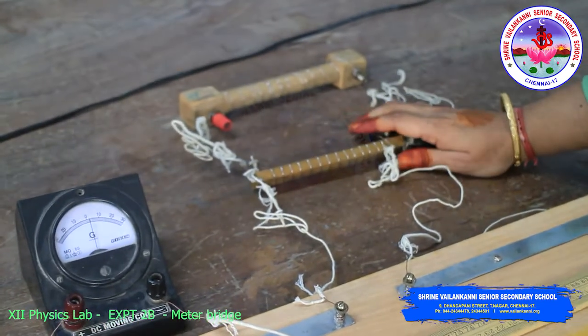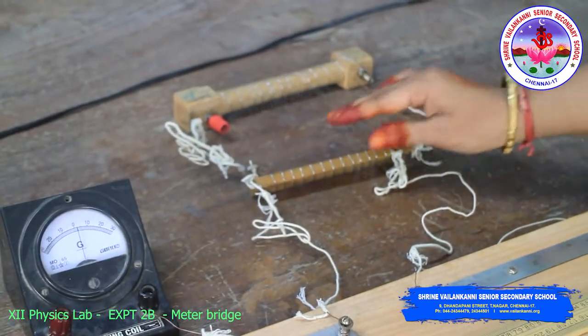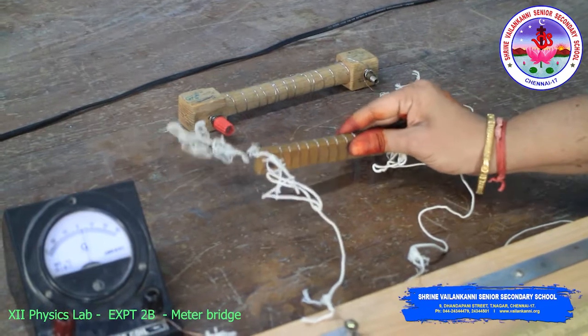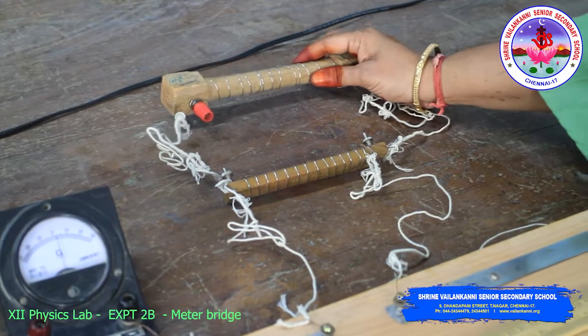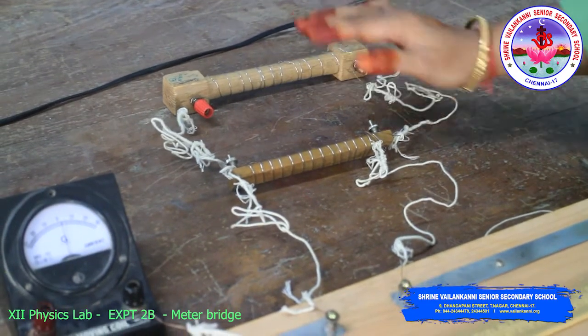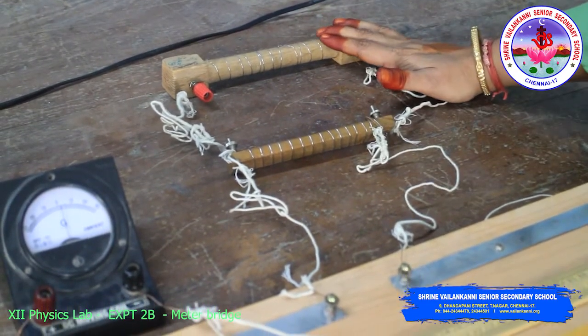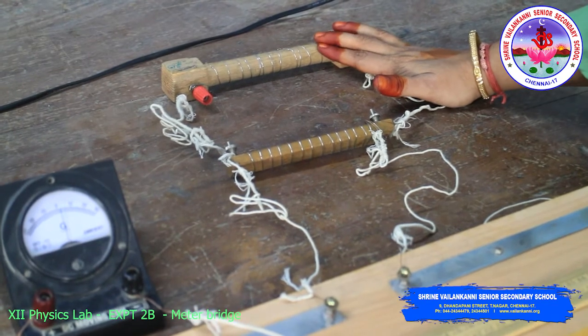As we have seen in the resistance in series, for the readings you have to take for R1 and also the readings for R2 separately first. Then you have to connect like this in parallel. Now we will take the readings for parallel.